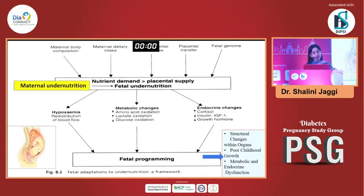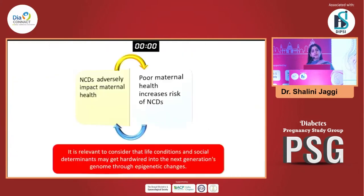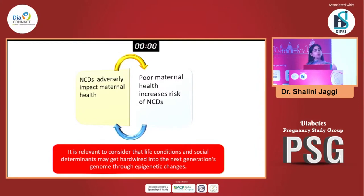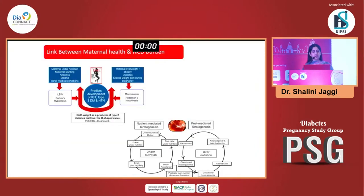With maternal undernutrition, the fetal programming that occurs means this baby catches up depending on the environment it gets post-birth. It gets into a starvation mode when in the womb; once it is born and gets plenty of food, it starts storing fat and becomes obese. These NCDs adversely impact maternal health, and poor maternal health increases the risk of NCDs — so it is very important to start to gain control right before the woman gets pregnant. This is the link between maternal health and the NCD burden.